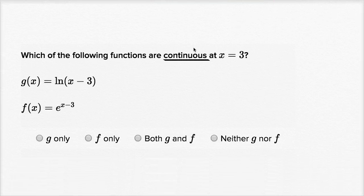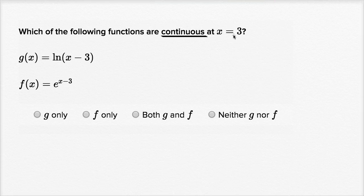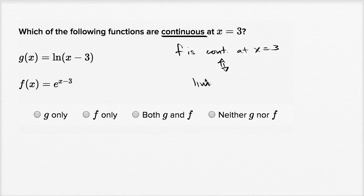So over here in this case, we could say that a function is continuous at x equals three if and only if the limit as x approaches three of f of x is equal to f of three.